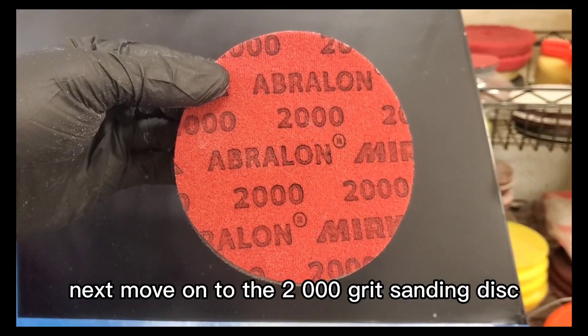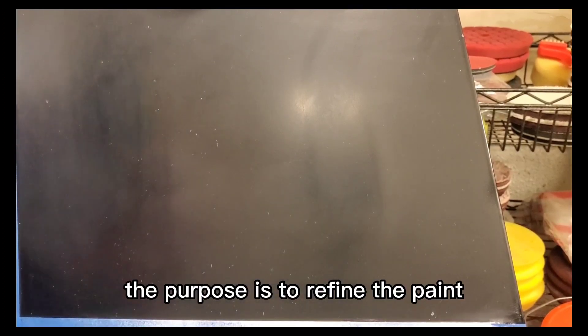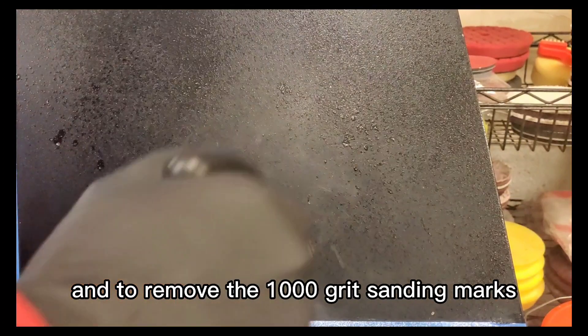Next, move on to the 2000 grit sanding disc. The purpose is to refine the paint and to remove the 1000 grit sanding marks.